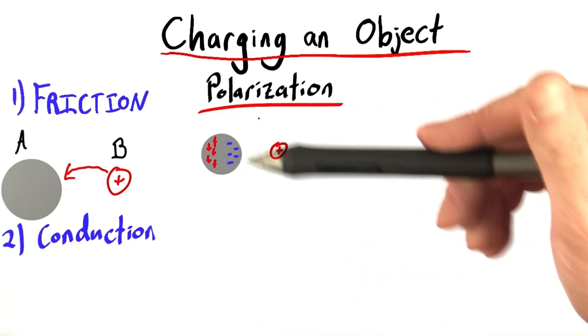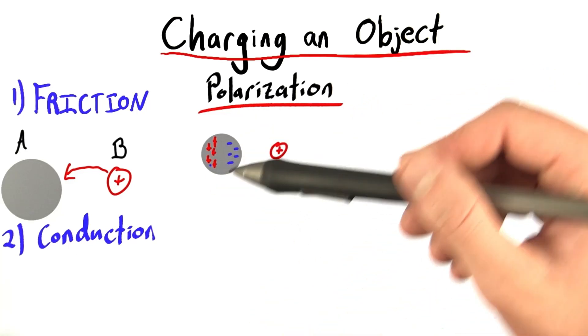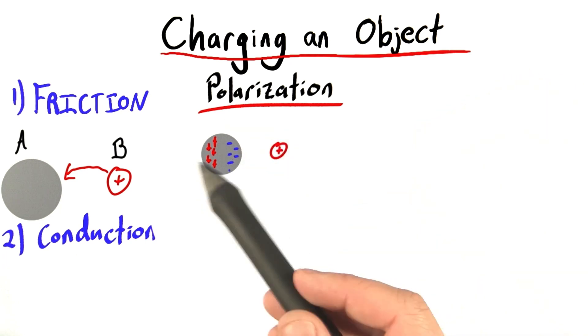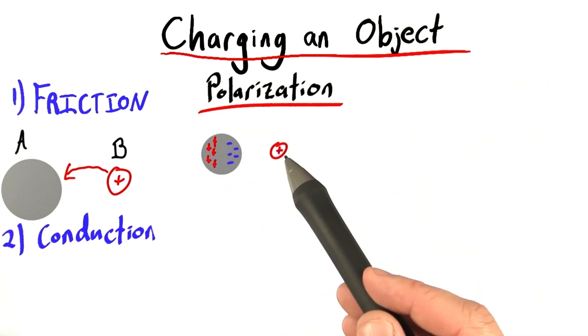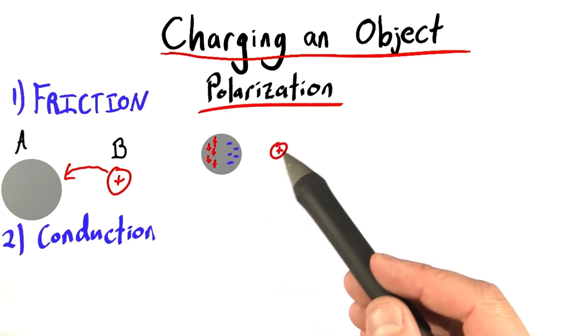Now, as a reminder, polarization occurs when we bring a charged object next to an uncharged conductor and allow the charges to separate, because the negatives are attracted to the positive and the positives are repelled.